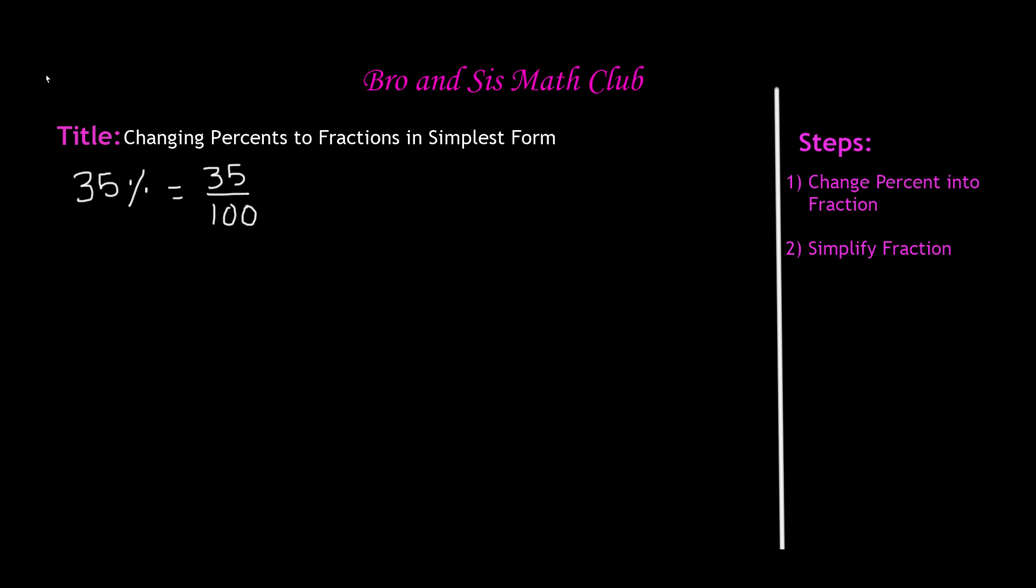One way to do that is to see what number is 35 a multiple of. So if you look at the numerator, what number is that number a multiple of? So we know that 35 is a multiple of the number 5.